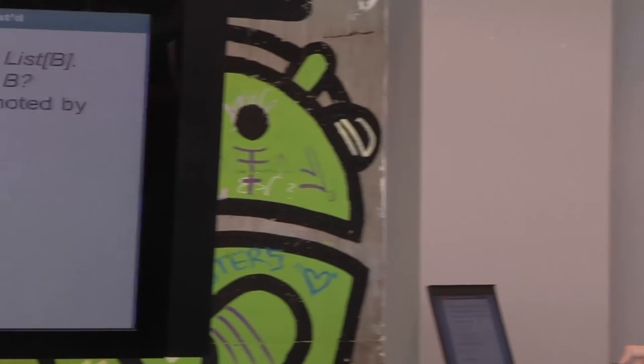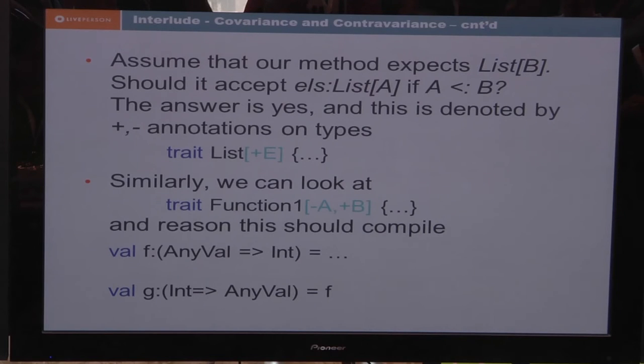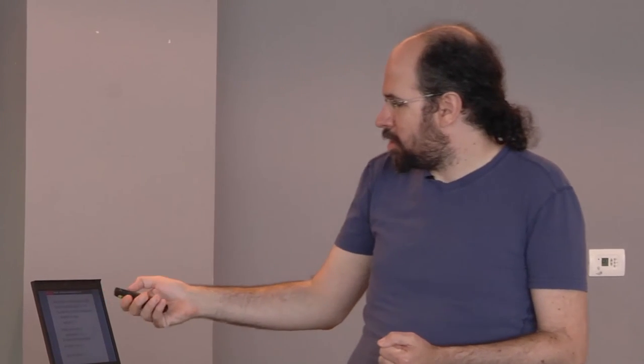Another example is the function type. Function is contravariant (minus) in the first parameter and covariant in the second. This means if I have a function from any value to int and I'm expecting a function from int to any value, this should compile. My function takes an A and returns a B. Any function that can take a supertype of A can also eat an A, because A is a subtype of the parameter. And any function returning a subtype of B can be treated as returning a B. This principle is used throughout the collection libraries for map, flatMap, and similar.